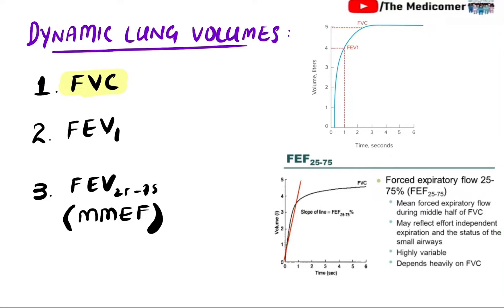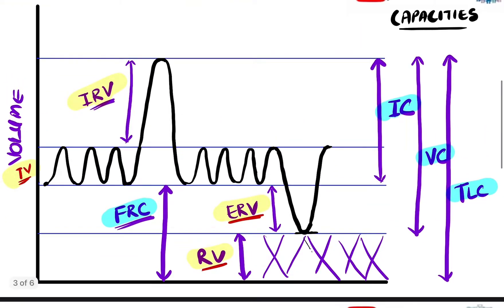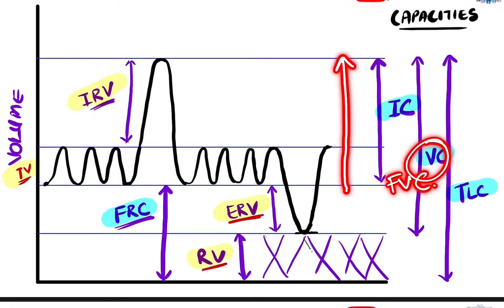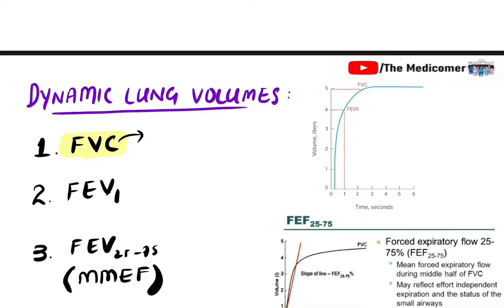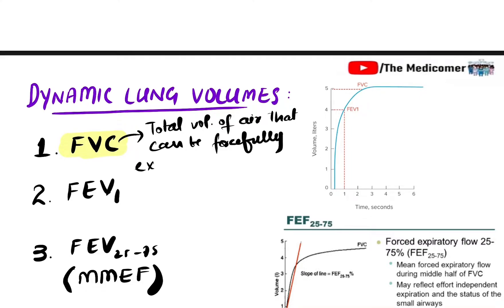We already discussed the forced vital capacity. The forced vital capacity is the inspiratory reserve volume plus tidal volume plus expiratory reserve volume. In words, it is the total volume of air that can be forcefully expired after forceful inspiration.